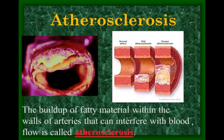Atherosclerosis is commonly referred to as hardening of the arteries. As seen in the picture, it's a buildup of fatty material — commonly called plaque — on the inside of an artery. It becomes very brittle and hard, so the artery can't expand and can't carry as much blood. The diagram shows how this buildup can occur over decades.